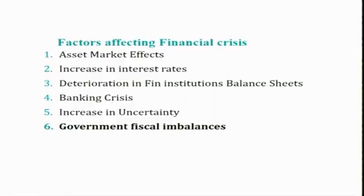In the previous session we discussed what are the factors affecting financial crisis and we had discussed five key points. The remaining one is government fiscal imbalances, and this point is more relevant for developing countries and emerging market economies. After completing this point, we will see the theoretical framework for the sequence of events in a financial crisis in general.